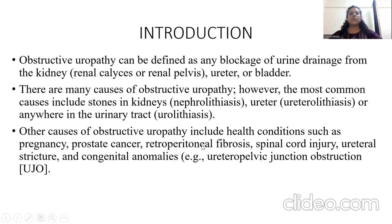Coming on to the introduction: obstructive uropathy can be defined as a blockage of urine drainage from the kidney, ureter, or bladder. There are many types of obstructive uropathy. However, the most common causes include nephrolithiasis — stones in the kidney — ureterolithiasis, that is stones in the ureter, or urolithiasis anywhere in the urinary tract. Other causes include pregnancy, prostate cancer in males, retroperitoneal fibrosis, spinal cord injury, ureteral strictures, and ureteral anomalies.